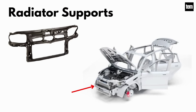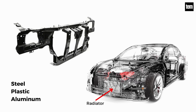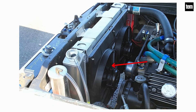Radiator supports. The vehicle radiator is supported and mounted to the car's mainframe by a mechanism called radiator support. Radiator support is a frame made of steel, plastic, or aluminum that protects the radiator from damage by securing it onto the hood of the car. It also holds the condenser assembly and cooling fan system, preventing them from harm while the car is running.